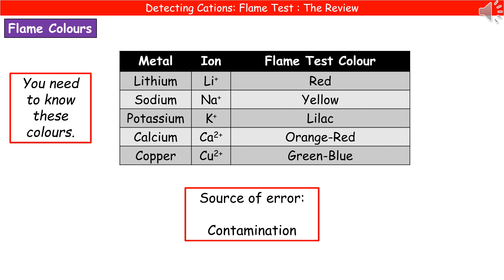If they ask you to evaluate a potential source of error in this experiment, the most likely one is contamination. Your loop may not have been cleaned properly, giving more than one colour, or you could have two different chemicals mixed together. Hopefully you can now describe how to carry out flame tests and how to interpret them.